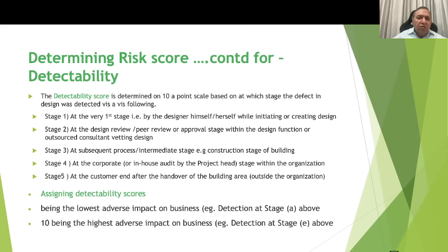The detectability score is determined on a 10-point scale based on which stage the defect in the design is observed. Stage 1 is at the very first stage — for example, at the time of conceptualizing or creating the design. Stage 2 is at the design review, peer review, or approval stage within the design function, or when an outsourced consultant vets the design. Stage 3 is at the subsequent intermediate process stage, meaning the design defect is found during the construction stage of the building. Stage 4 is at the corporate in-house audit stage by the project head within the organization. Stage 5 is when the risk is observed by the customer outside the organization — for example, cracks observed in the building once it has been occupied. A score of 1 represents the lowest adverse impact detected at stage 1, and 10 represents the highest adverse impact detected at stage 5.